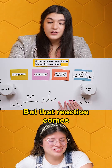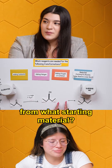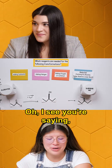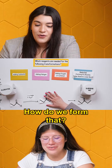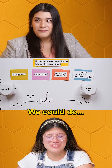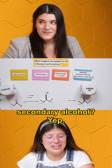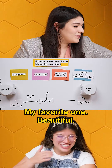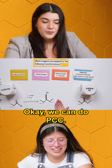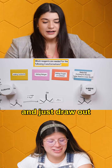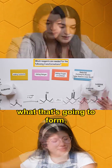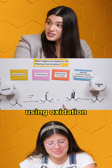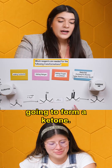The ylide comes from what starting material? A ketone. Yes — so we need to form that first. This is a secondary alcohol, so we could do PCC oxidation. We know a secondary alcohol using PCC oxidation is then going to form a ketone.